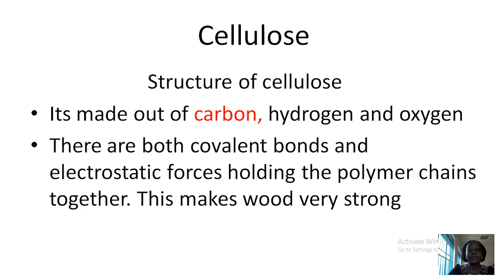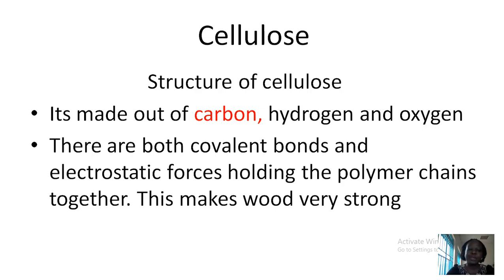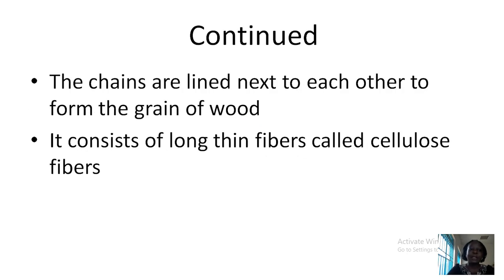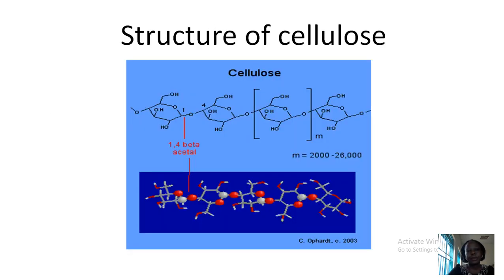Can we discuss in detail about the cellulose? Cellulose — one of the major products of the cellulose is wood. What is the structure of cellulose? Cellulose is mainly made out of carbon, hydrogen and oxygen. In the structure of cellulose there is both the covalent bond and then the electrostatic forces that hold the polymer chains together. Because of the combination of the two — the covalent bond and the electrostatic force of attraction — the wood is very strong, and then the chains align next to each other to form the grain of wood. It also consists of long thin fibers called cellulose fibers.